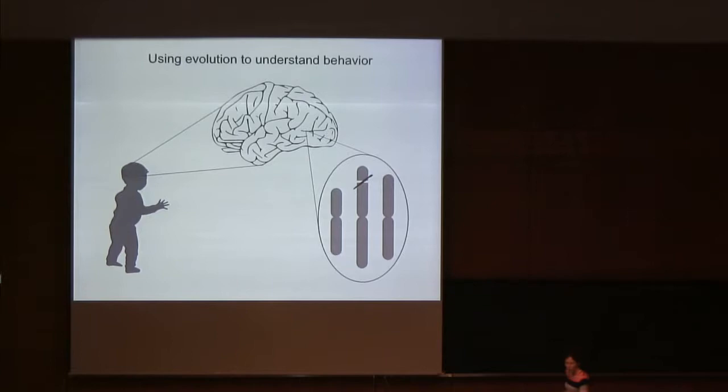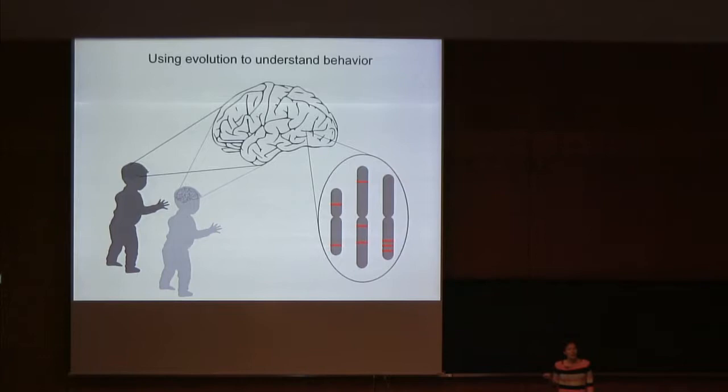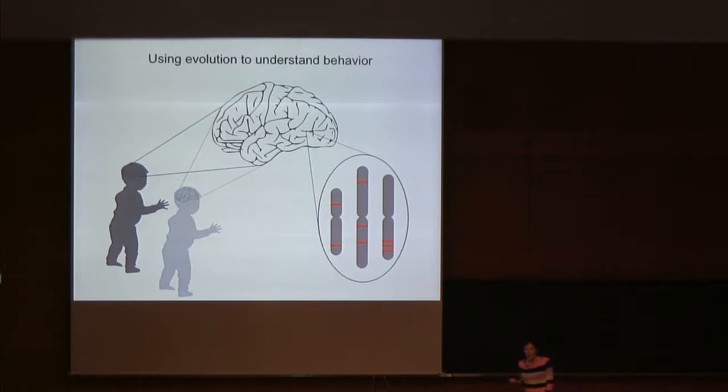If we can identify two closely related populations that differ in a behavior of interest, we know their genomes must contain key differences in genes that regulate that behavior. If we can map those differences, we can identify a set of genes that affect a specific behavior and study the mechanisms by which those genes affect behavior. Studying behavioral evolution this way is a relatively untapped resource for identifying basic links between genes, neurons, and behavior.